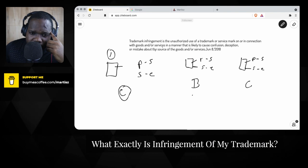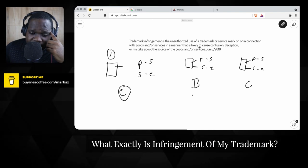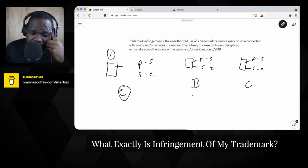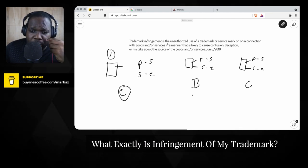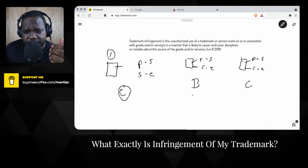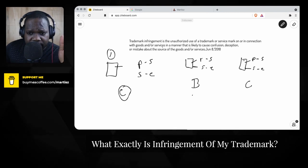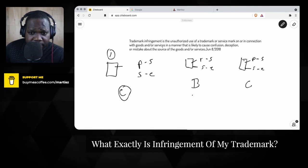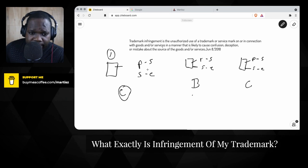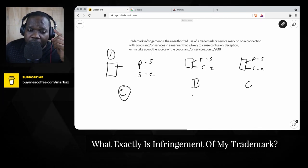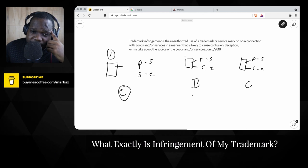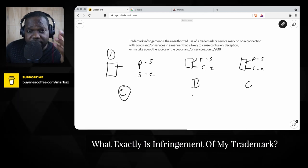When there is confusion—you see, it's likely to cause confusion—then there is trademark infringement. Or deception: let's say someone creates the same trademark and they try to create fake products, then there is trademark infringement. Or when there is a mistake, that's also trademark infringement.